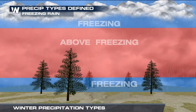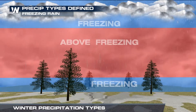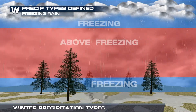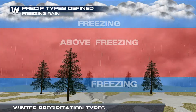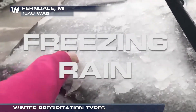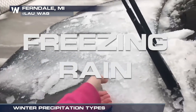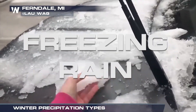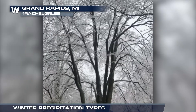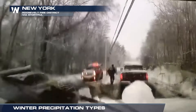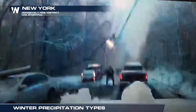When a thicker layer of warm air moves in, the snow melts and stays in liquid form longer. When a thin layer of freezing air is still near the ground, the liquid freezes on surface contact, forming a glaze of ice on everything it touches. Accumulated ice can weigh down trees and utility lines, causing widespread power outages.